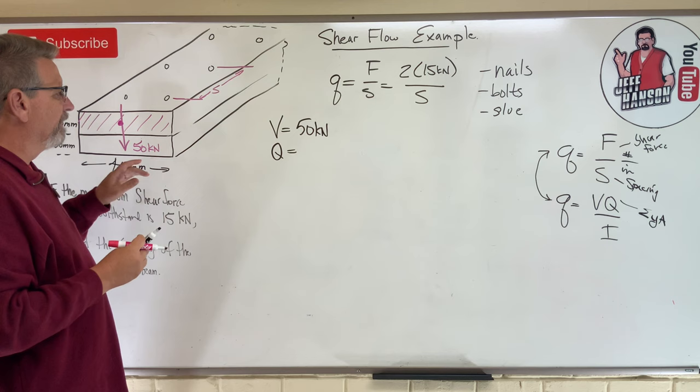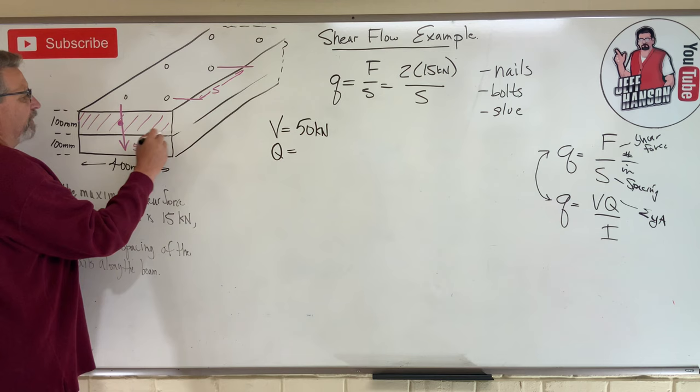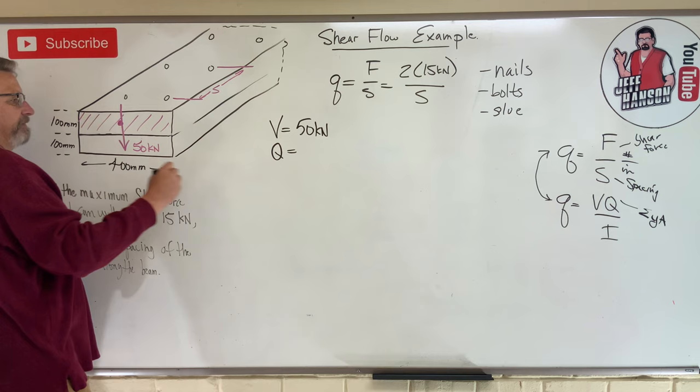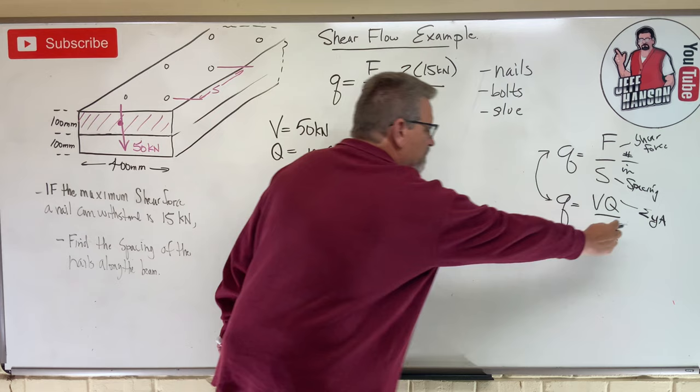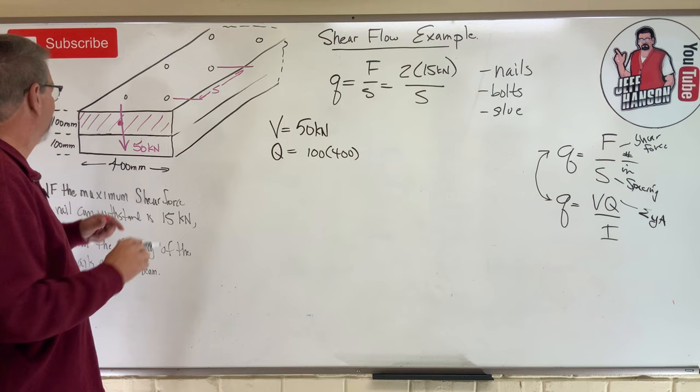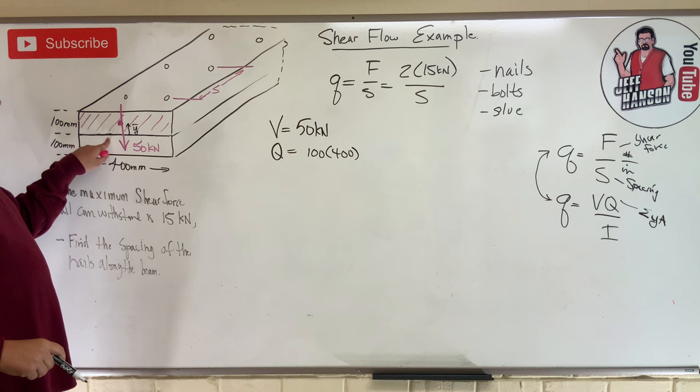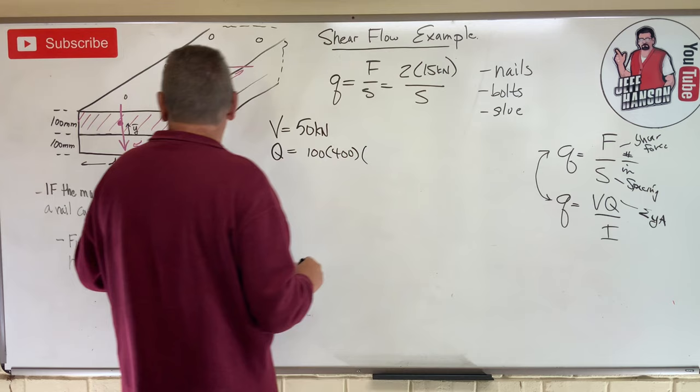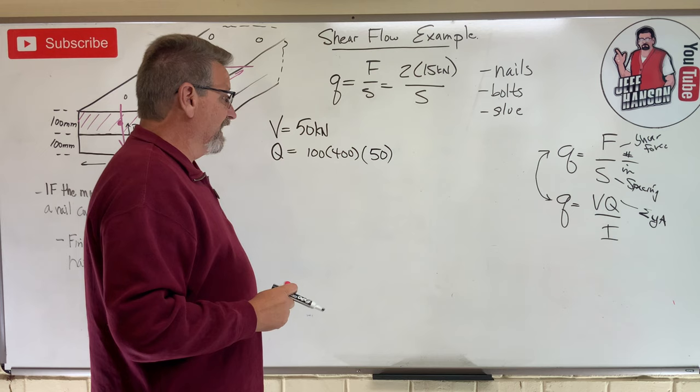So on this problem, Q is going to be this area right here. Because I'm trying to make this shear plane here fail, where those two boards are nailed together, so I can test the strength of those nails and how often do I need to put one. Now I'm going to put a dot here. Why a dot right in the middle of that shape? Because remember what is Q? Q is the area above the point of interest. So I'm looking at this plane right here is the one I'm interested in. So Q is this area up here, which is going to be what? 100 times 400, that's the area, times y bar, which is always measured from the neutral axis. So y bar is this distance here from the neutral axis of the whole beam to the centroid of the piece part. So in this case, it's going to be 50.